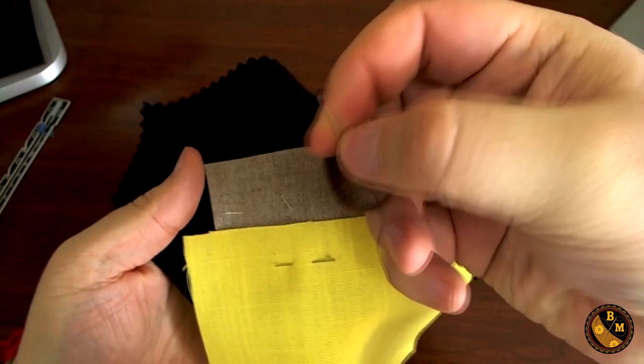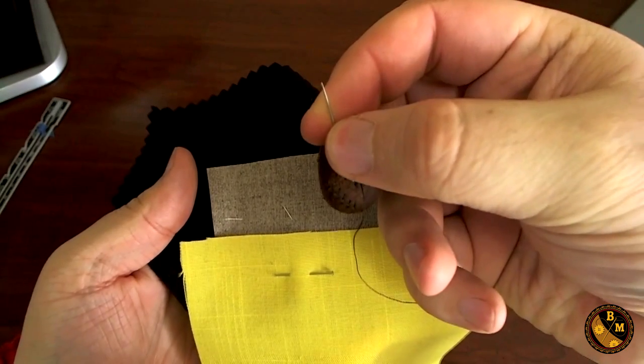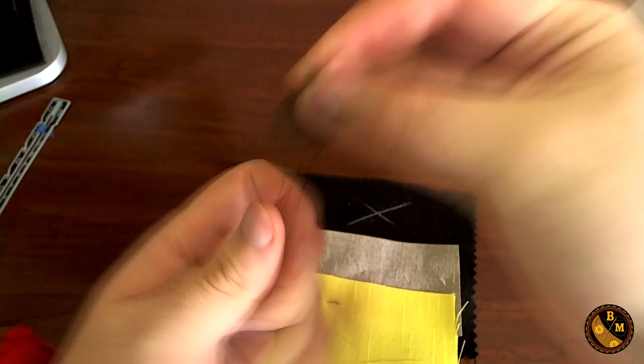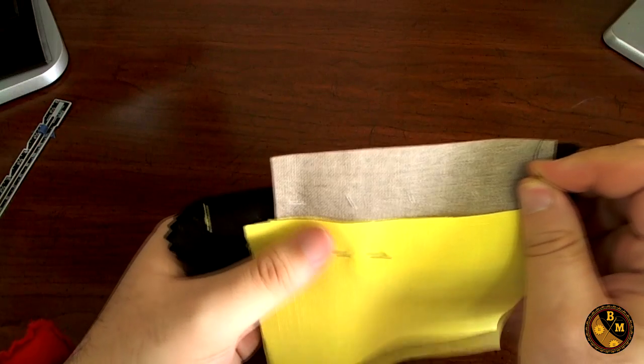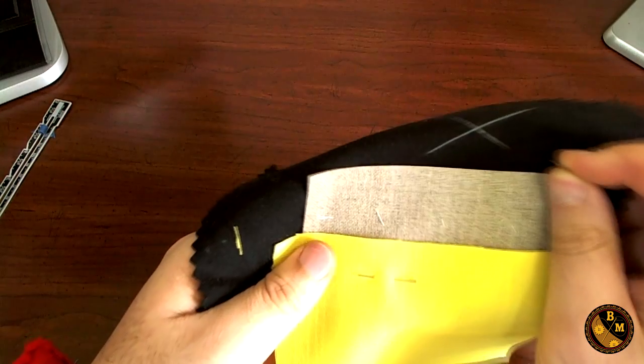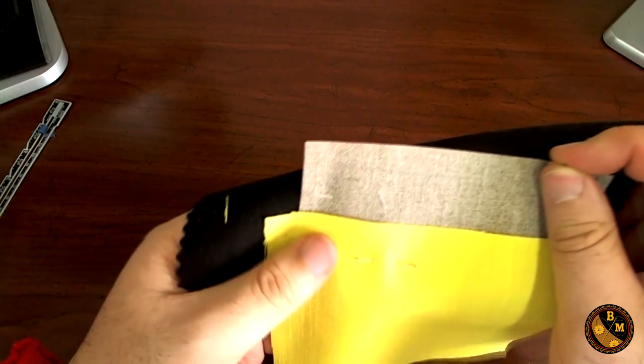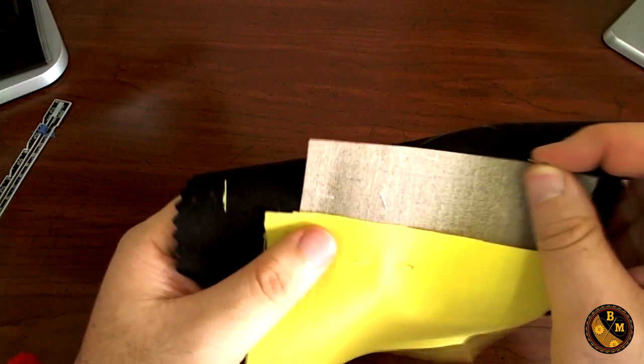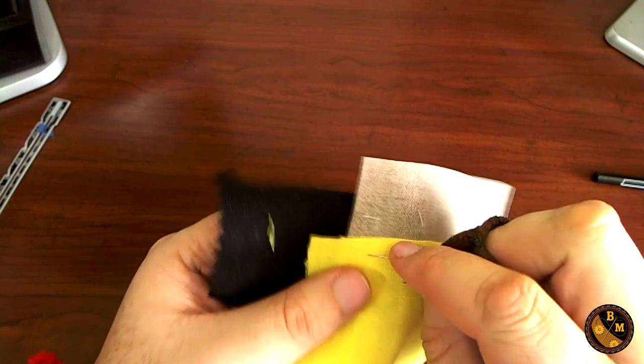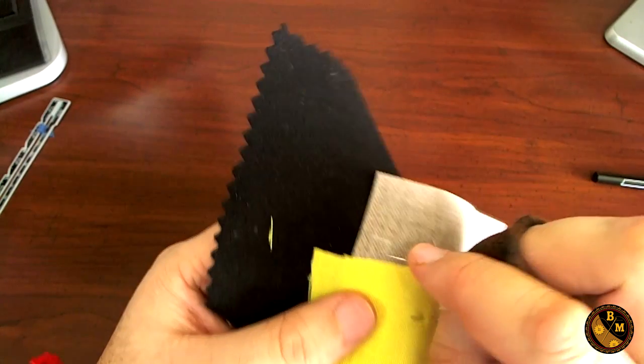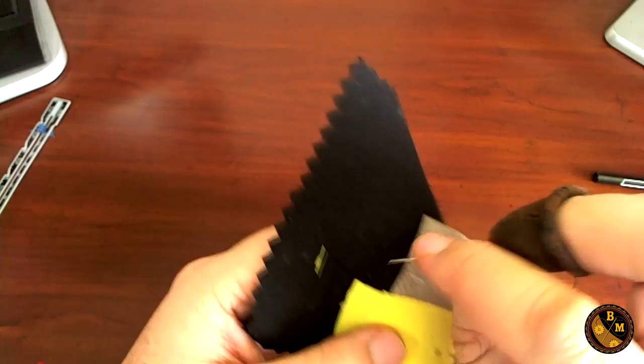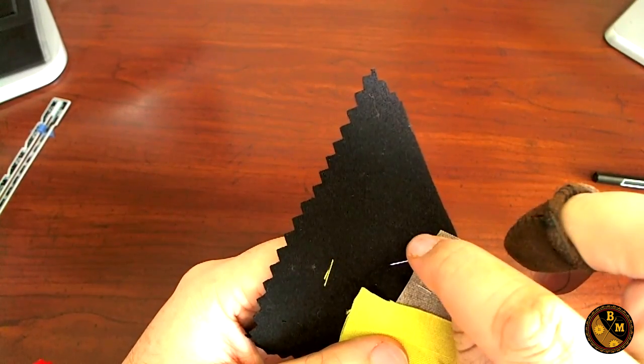For this stitch I'm going to be using the middle sized number 7 needle and some silk finishing thread. This stitch in this particular situation you do not want to see on the outside of the garment. Therefore when I make the stitch I'm only going to be passing through the pocketing material and the canvas. This will be left untouched as much as possible.